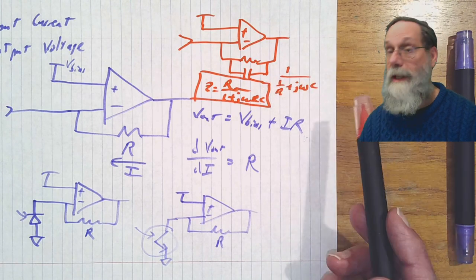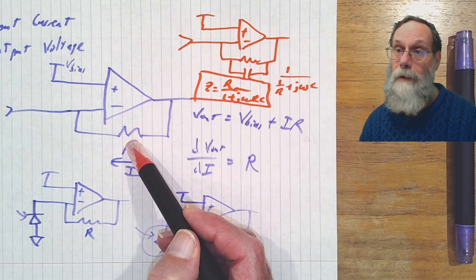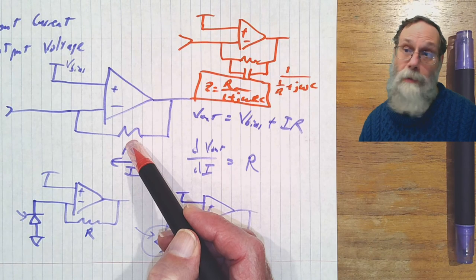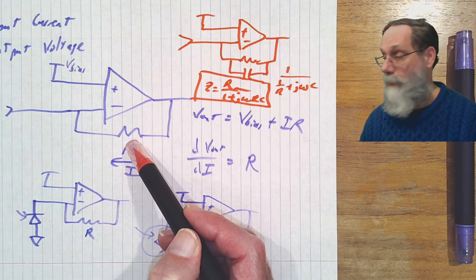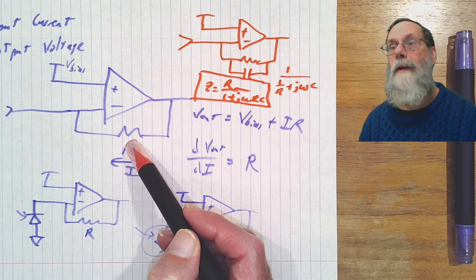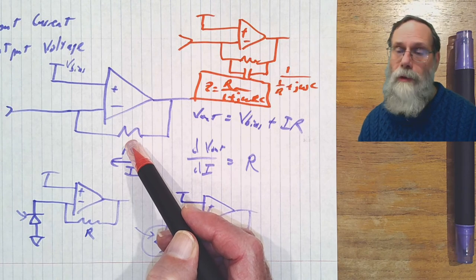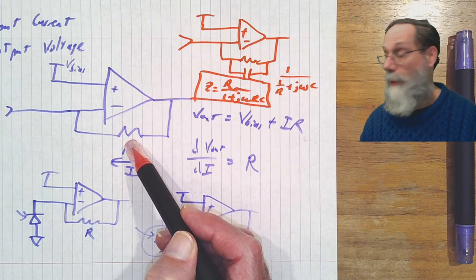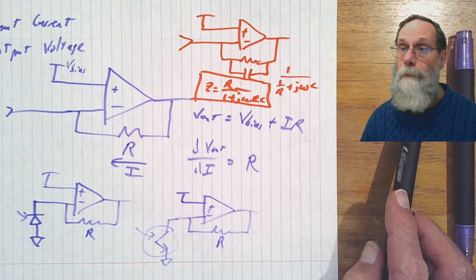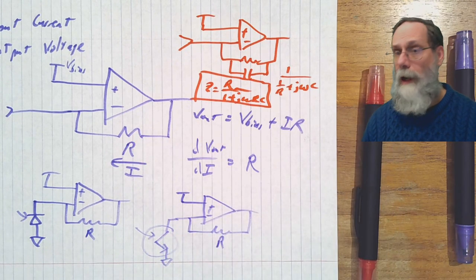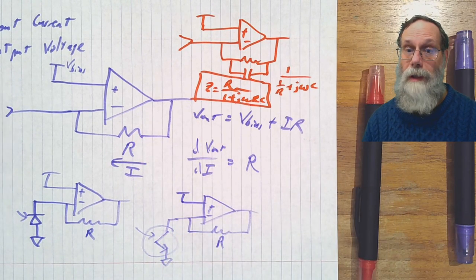You can also put a potentiometer in place of the resistor. If you put a potentiometer in here, you can have an adjustable gain transimpedance amplifier. So basically anything that we can do with a regular voltage amplifier, we can do with a transimpedance amplifier also. Okay, that's enough for the first part on transimpedance amplifiers.